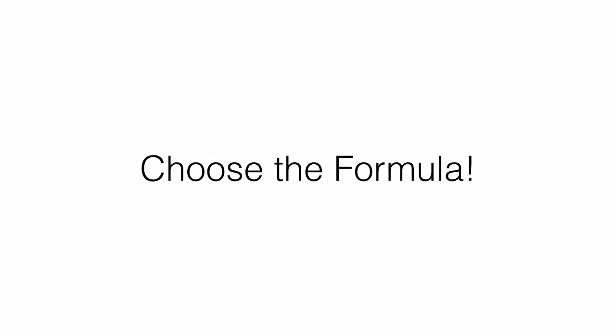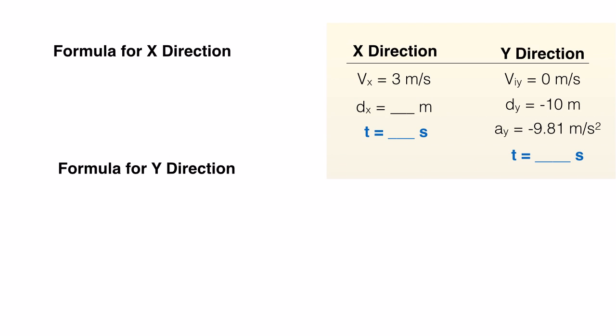Now that we've recorded our information in an organized fashion, it's time to choose a formula. We'll need one from our x direction and one from our y direction. The formula for the x direction is simple. Since we have a constant velocity, meaning no acceleration, there's only one to choose from. That velocity is distance divided by time.